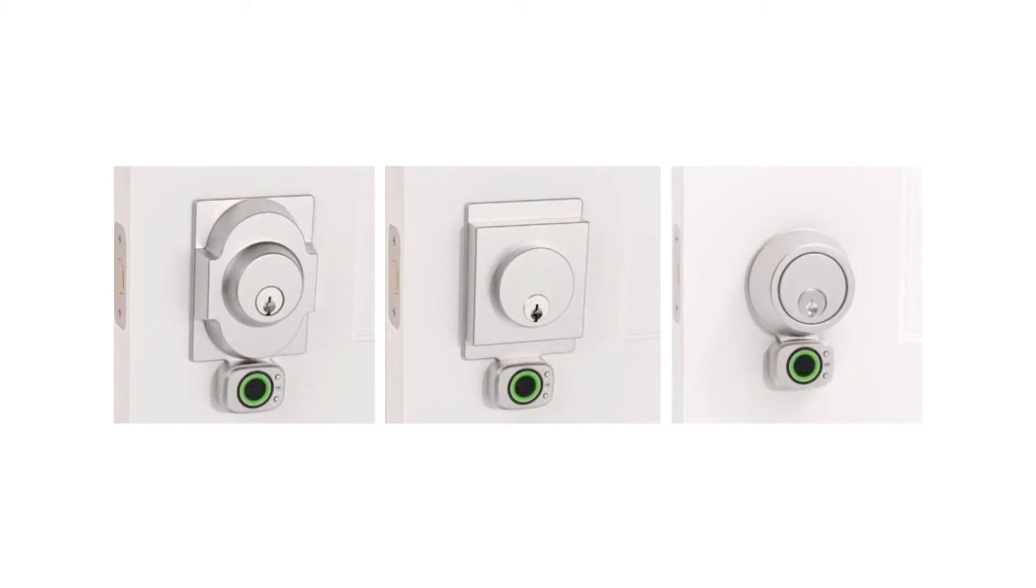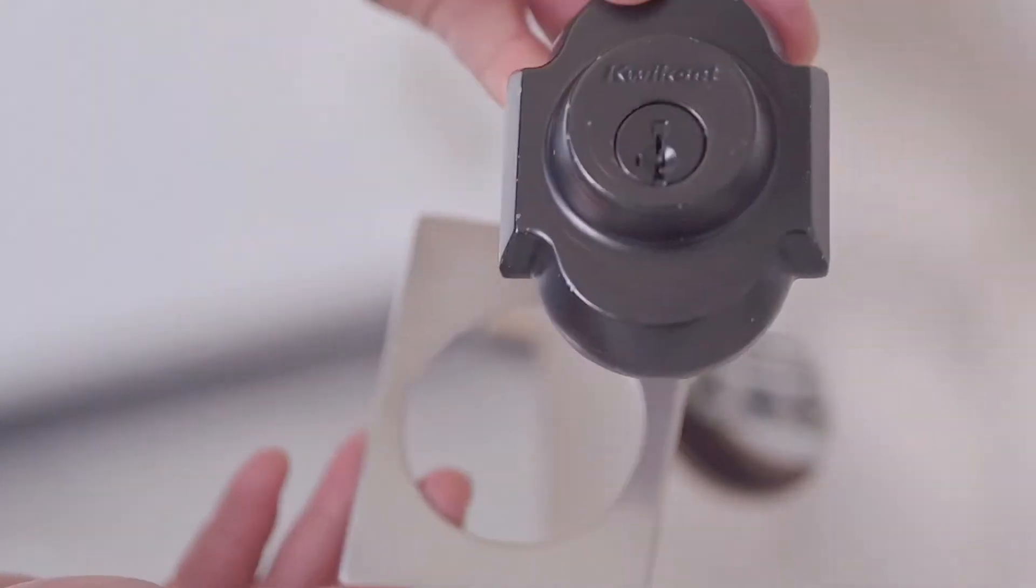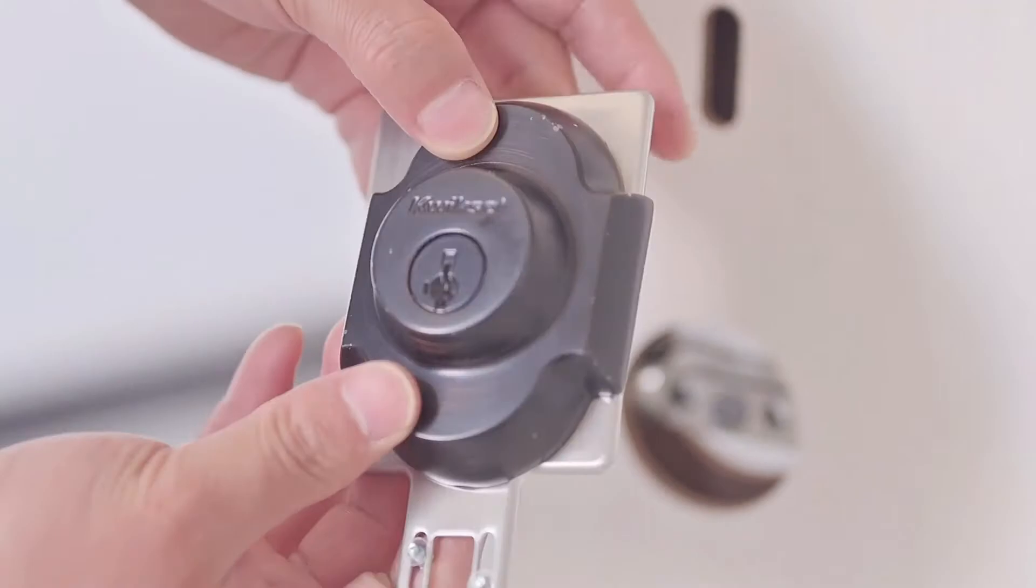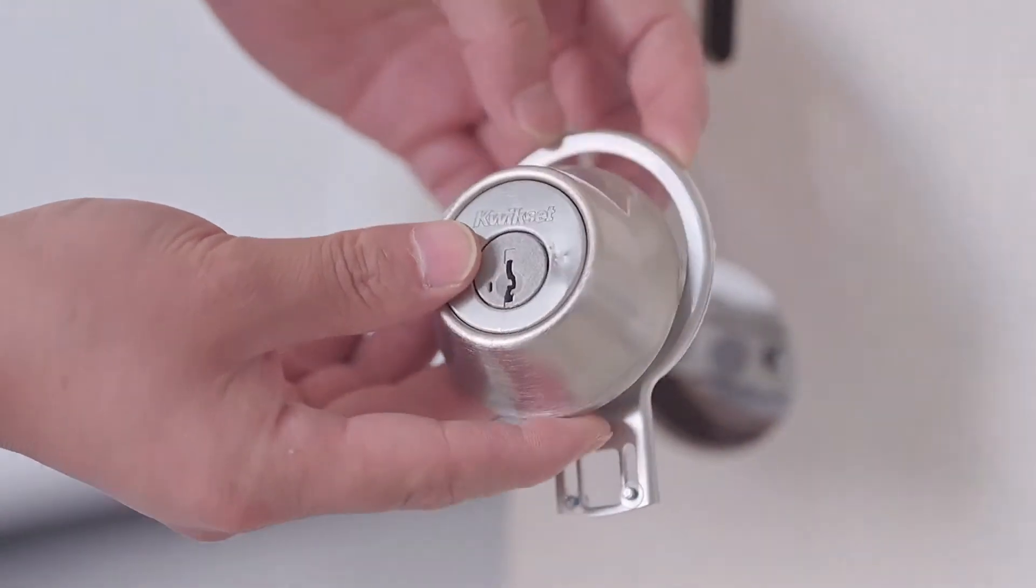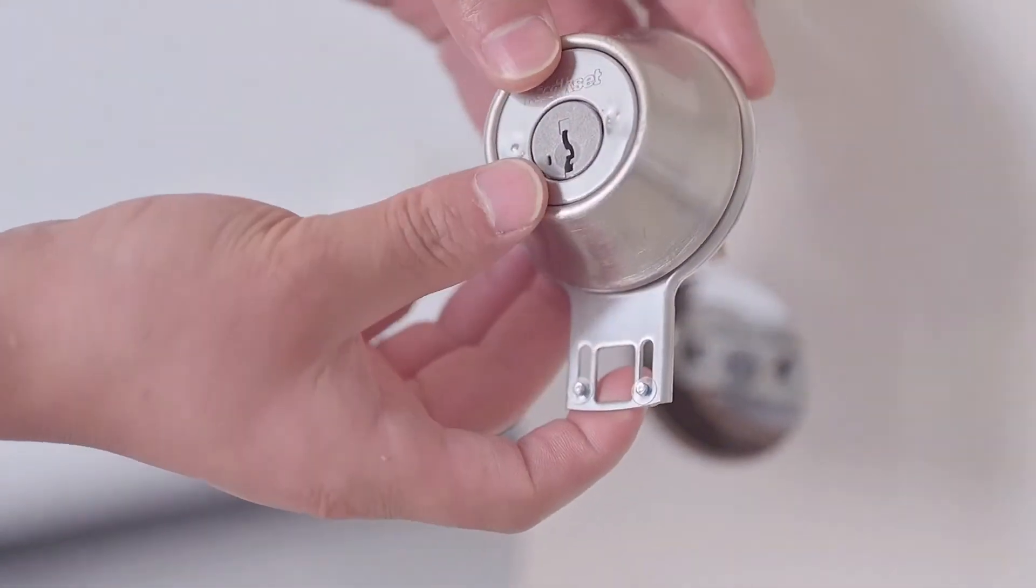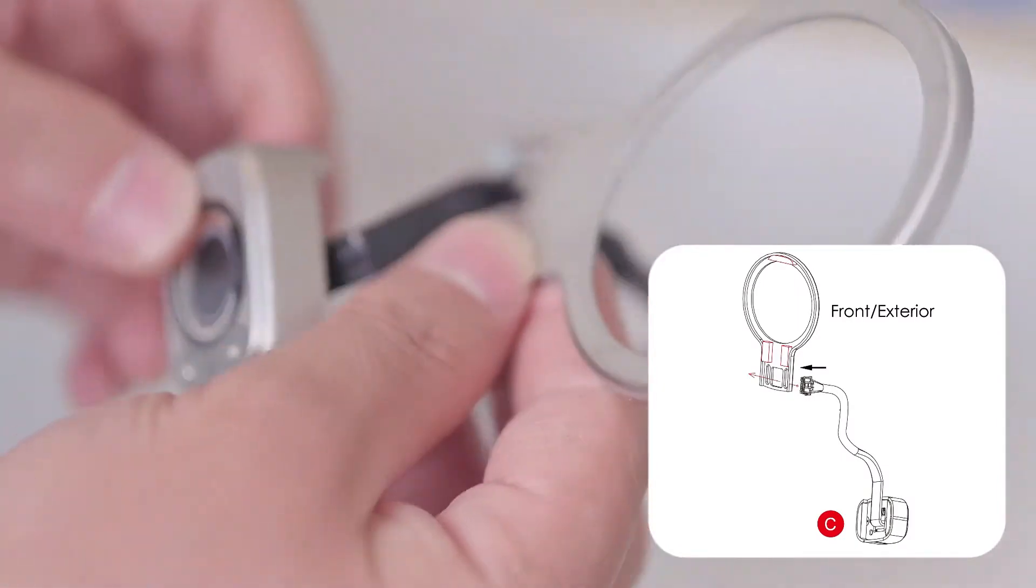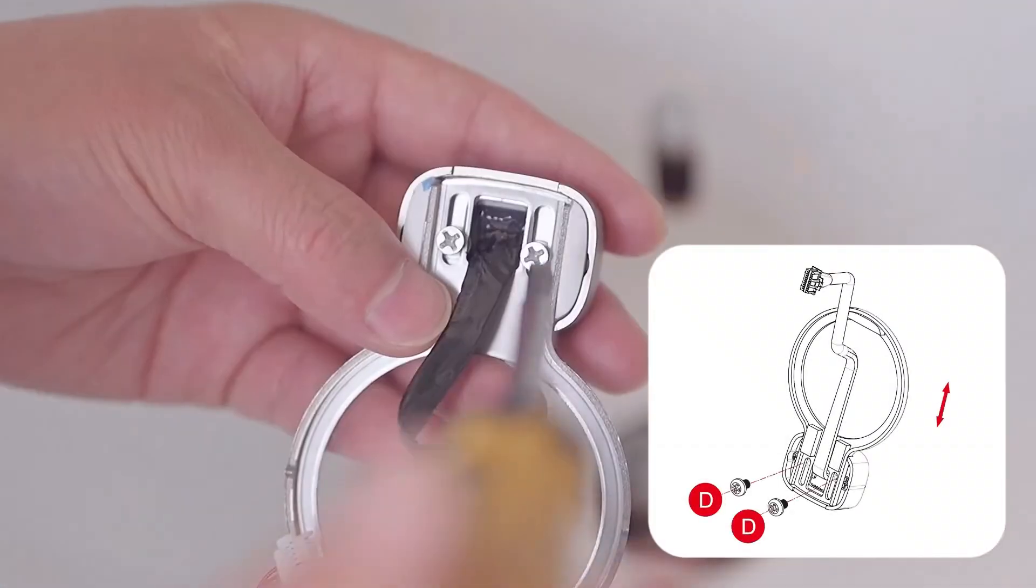Installing the fingerprint sensor: select the appropriate mounting plate for the style and shape of your existing lock. With the mounting plate facing out, route the cable of the fingerprint sensor through the hole.